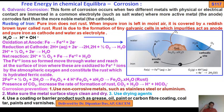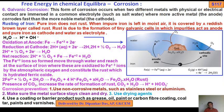Corrosion prevention — how will you prevent corrosion? Number one: use of non-corrosive metals such as stainless steel or aluminium. Number two: make sure the metal surface stays clean and dry. Number three: use drying agents. Number four: use a coating or barrier product such as grease, oil, paint, varnish, carbon fiber coating, coal tar, etc.